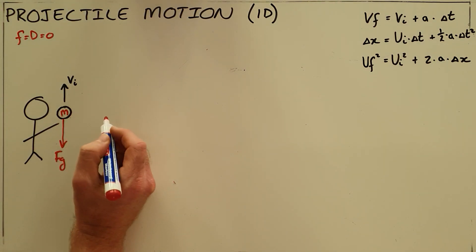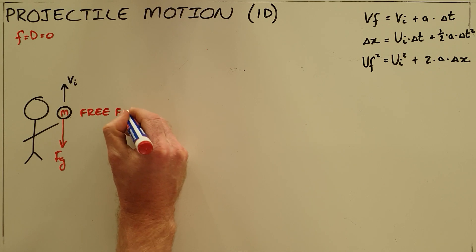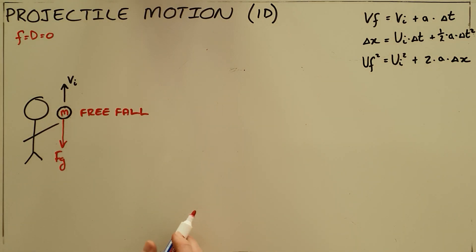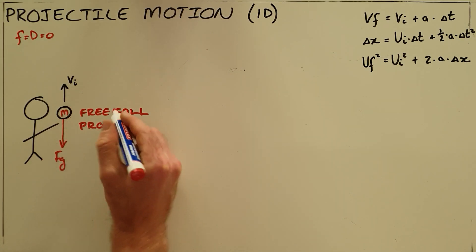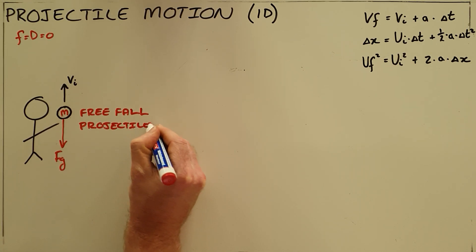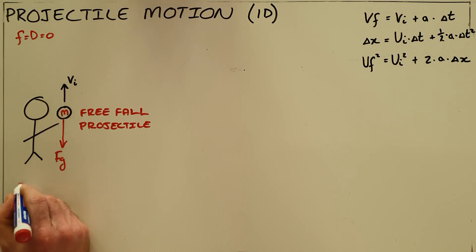We define this type of motion—the motion of an object that is only acted upon by the force of gravity—as freefall, and we say that this object is now a projectile. It is a projectile because it is an object acted upon only by the force of gravity, or put more simply, it is an object in freefall.